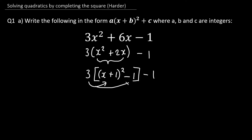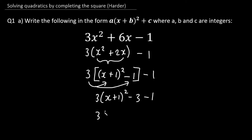Next, expand the square brackets by multiplying the 3 on the outside onto everything inside: 3 times (x + 1)² stays as 3(x + 1)², and 3 times − 1 gives − 3. Bringing down the − 1 and simplifying: − 3 − 1 = − 4. So our completed-square form is 3(x + 1)² − 4, meaning a = 3, b = 1, and c = − 4.